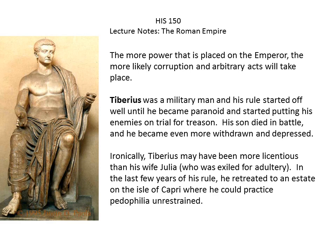But Tiberius became paranoid — when you're emperor, everybody wants to take you down — and he started putting enemies on trial for treason. Then his son died in battle and he became even more withdrawn and depressed. He essentially left Rome and moved to the island of Capri, where he practiced what we would consider today to be pedophilia, having young boys and girls there to service him. His wife Julia had been exiled for adultery, yet what he was doing was far worse — but isolated on Capri, he could do whatever he wanted without consequences.